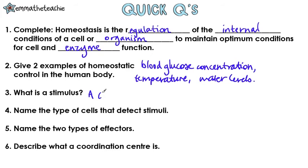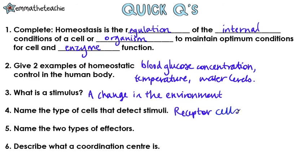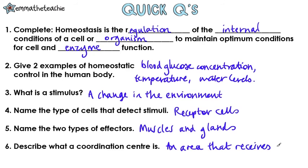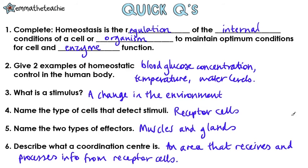What's a stimulus? This is just a change in the environment, internal or external. Name the type of cells that detect stimuli — those are receptor cells. Two types of effectors: we've got our muscles, and we've got glands, like the pancreas. And finally, a trickier one — a coordination centre. This is an area inside the body that will receive and process information passed on from the receptor cells. As long as you've got the bit about processing information from receptor cells, that's the important bit.